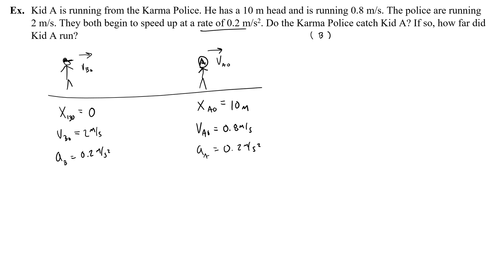Okay, then they both speed up, which means they both are going to have an acceleration. And those would both be positive of 0.2 meters per second squared. Okay, great. Do the Karma Police catch Kid A? If so, how far did he run? Okay, well let's write our graphable equations for these. For A, again, we're going to have half the acceleration times time squared, plus the initial velocity times time, plus the initial position. So for Kid A, half of the acceleration is 0.1 t squared. The initial velocity, 0.8 times t, and then the initial position, 10.